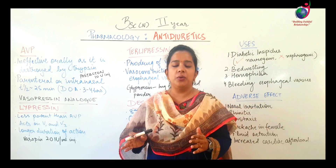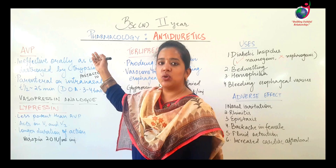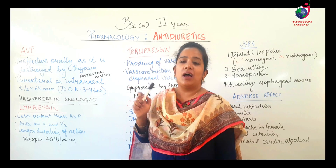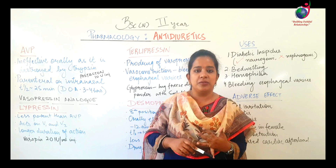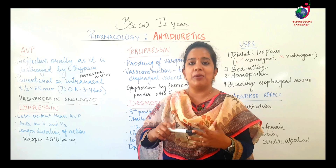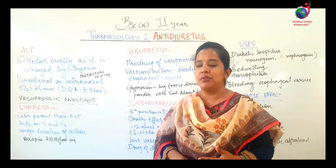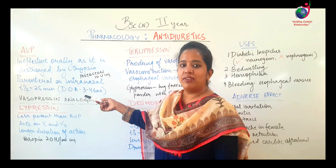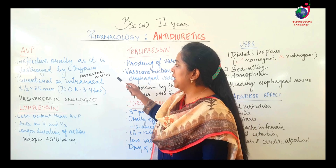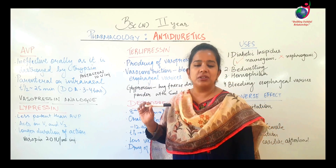The antidiuretic hormone in human beings is 8-arginine vasopressin (AVP). When given as a drug, it is orally ineffective because it metabolizes very quickly. It is administered parenterally; the plasma half-life is about 25 minutes and the total duration of action is about 3–4 hours. The preparation used is aqueous AVP, in a dosage of 10-unit injection given IM and subcutaneously.